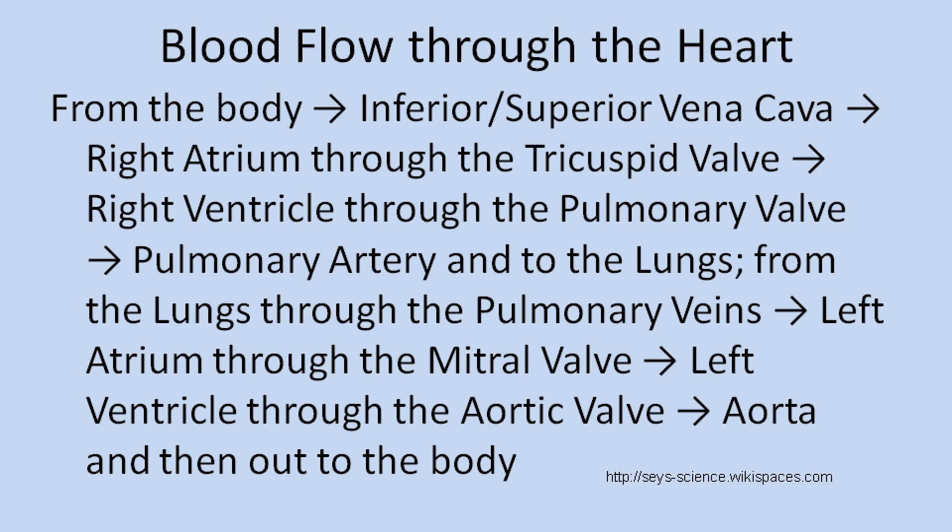From the lungs, the blood then comes through four pulmonary veins, through to the left atrium, through the mitral valve, down to the left ventricle, through the aortic valve, and then out the aorta and out to the body.